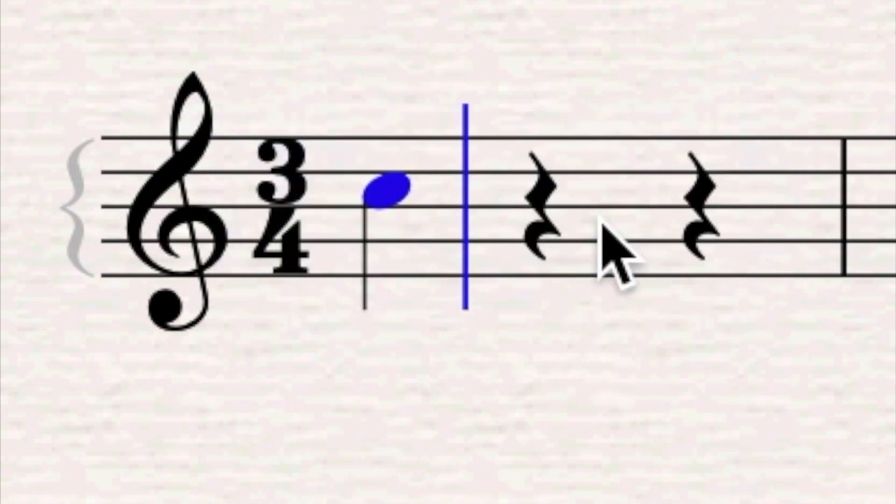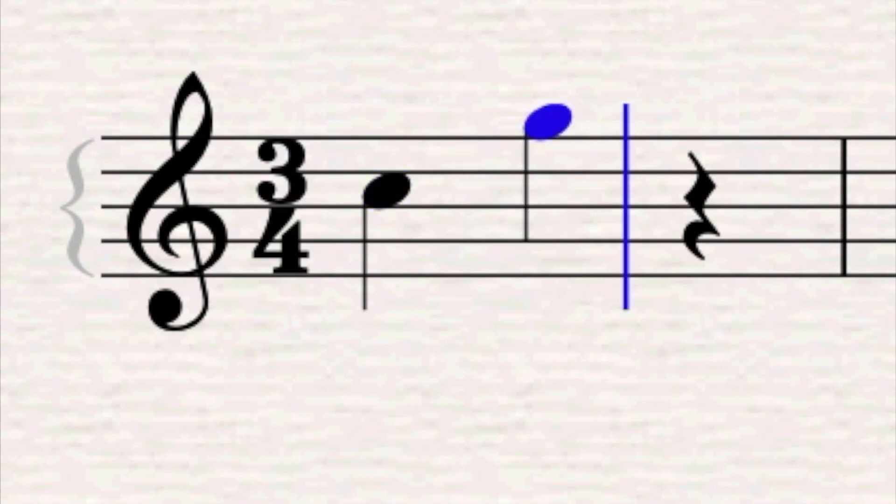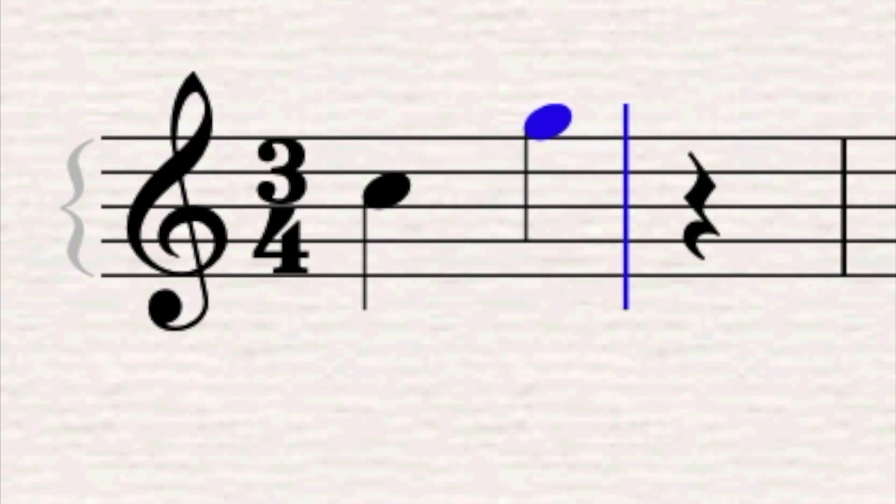Beat one I add a crotchet. Beat two I add another crotchet. I told you it was going to be simple. And beat three, well I'm just going to break that up into two quavers. Now here is an important tip: we've established a rhythmic pattern. Don't play around with it. Just repeat it over and over. We need to allow the time signature to create its own excitement.